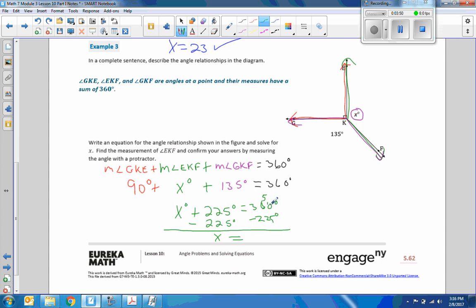And I found the measure of angle EKF, which is what the question asked for. Solve for X. X is 135, so therefore the measurement of angle EKF is 135 degrees. So to answer that question, you should say the measure of angle EKF equals 135 degrees.